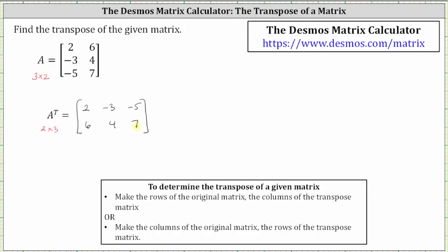Looking at the notes below, to determine the transpose of a given matrix, we make the rows of the original matrix the columns of the transpose matrix, or we make the columns of the original matrix the rows of the transpose matrix.